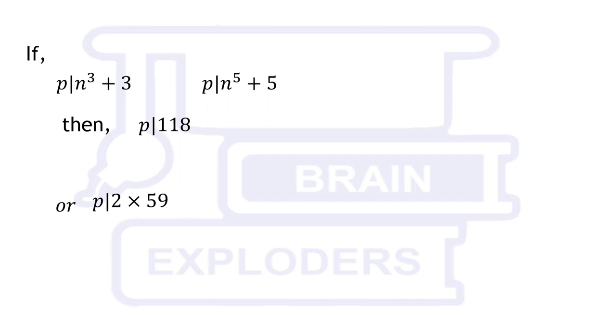118 has two prime factors which are 2 and 59. It means possible prime numbers which satisfy the condition in the question are 2 and 59.